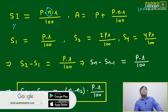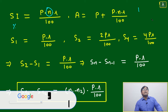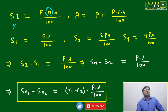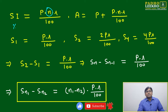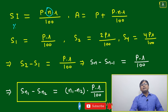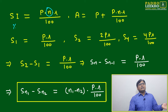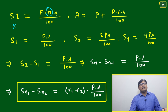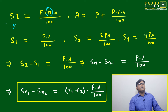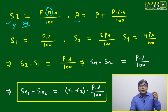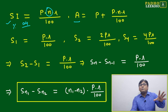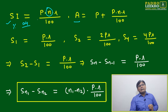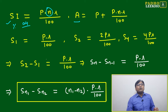We do the same percentage-type calculation: principal amount P multiplied by rate R divided by 100, then multiplied by N for more than one year. If N equals one, it simplifies to P × R / 100, which is the simple interest — not including principal. The total amount A equals principal plus simple interest: A = P + P×R/100.